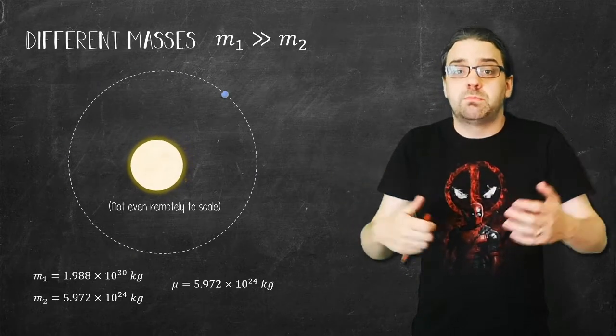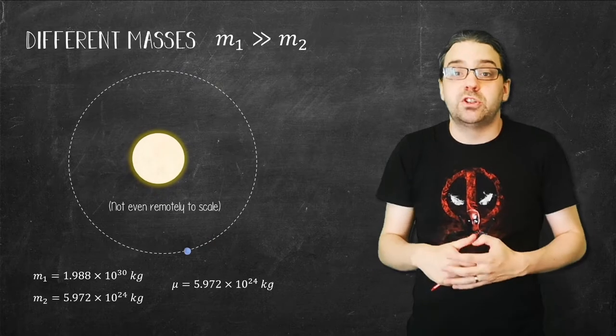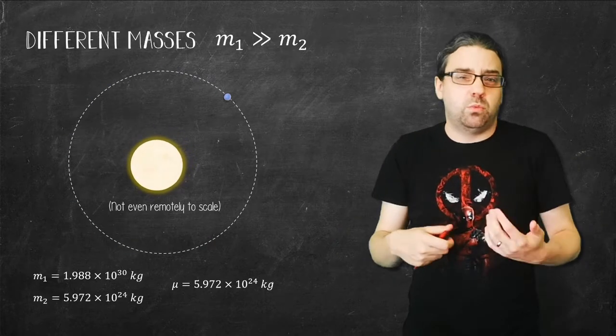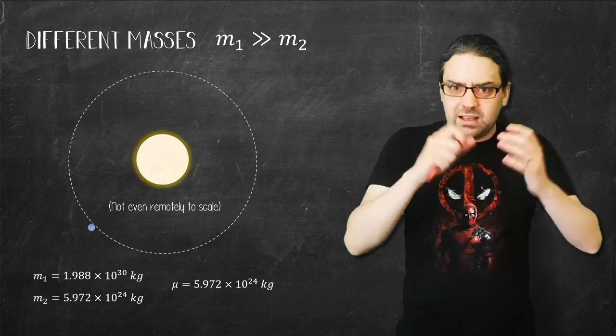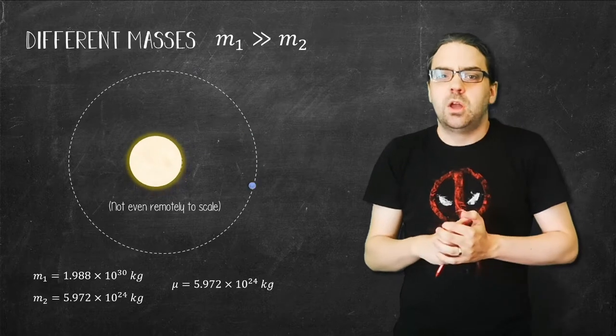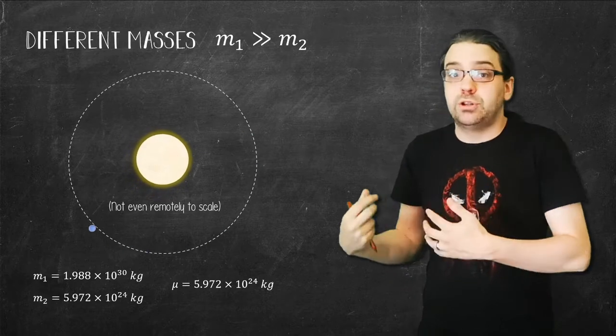Even for a much larger system such as the Sun-Jupiter reduced mass, the difference between Jupiter's mass and the reduced mass of the system is about one part in a thousand. So that's the power of the reduced mass. We can simplify a two-body system to one and create a perfect, predictable solution.